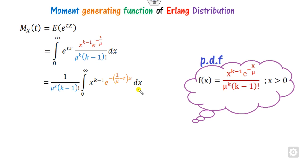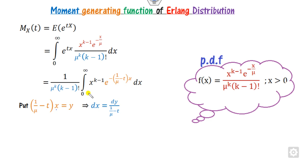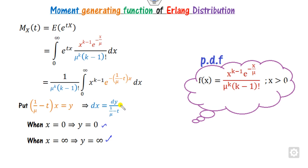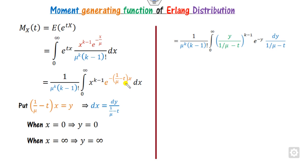To integrate, substitute y for the expression in x, and compute dy accordingly. When x goes from 0 to infinity, y also goes from 0 to infinity. After substituting, you get an expression where one factor is (1/mu minus t) raised to the power k minus 1, and another part which cancels out, yielding a factor of k independent of y that can be taken outside the integral.